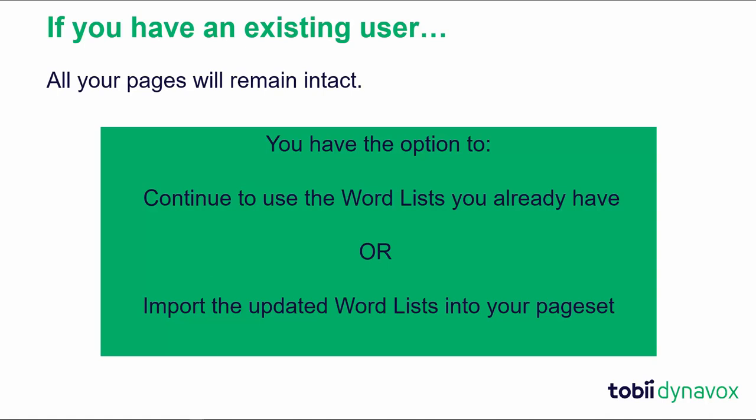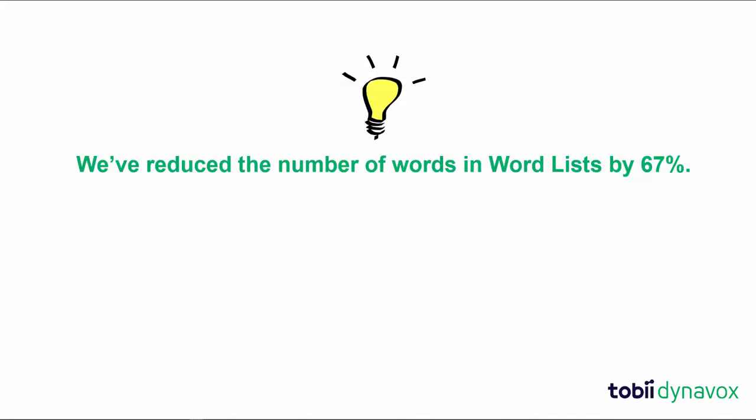Let's start by looking at some of the changes we've made. We've reduced the number of words in word lists by 67%, bringing the number of words from over 8,000 to about 3,000 words.